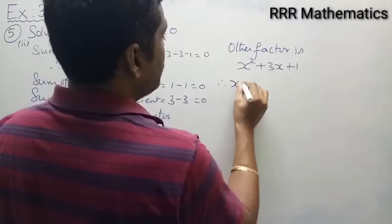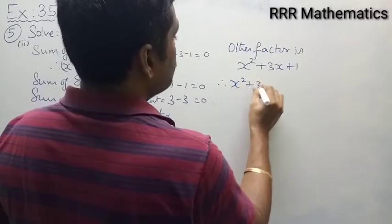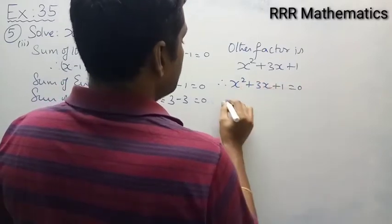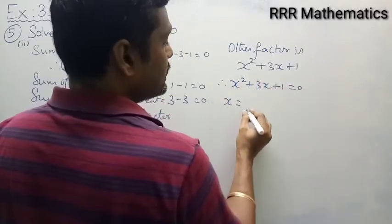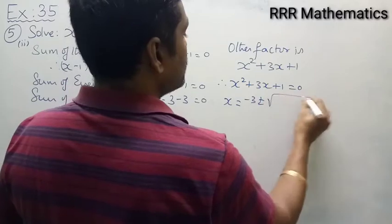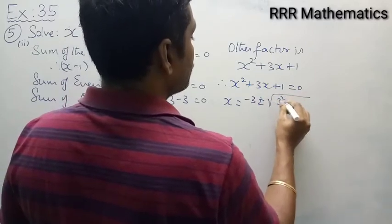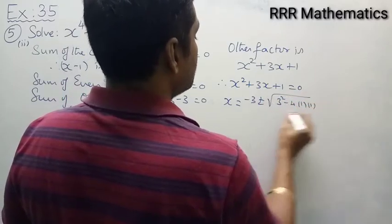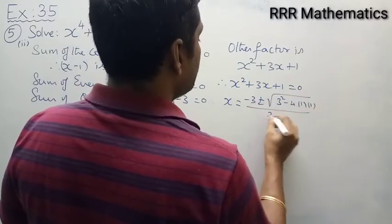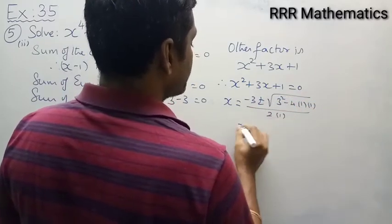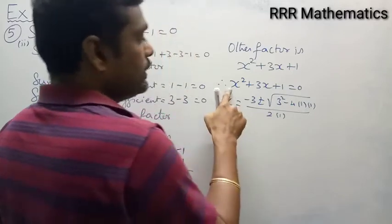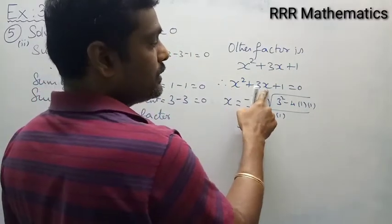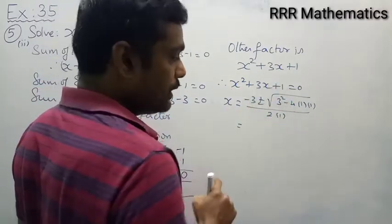When we equate x² + 3x + 1 = 0, we use the quadratic formula: x = (-b ± √(b² - 4ac)) / 2a, where a = 1, b = 3, and c = 1.